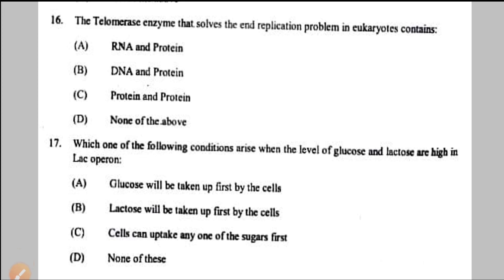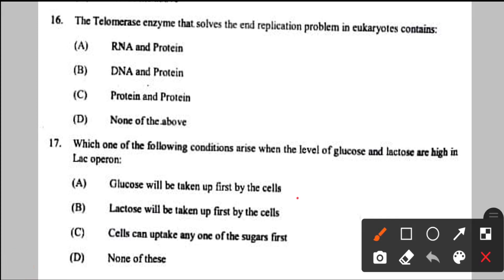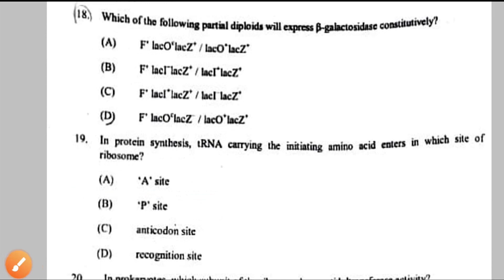Question number 17: condition when levels of both glucose and lactose are high in lac operon. When glucose level is low, lactose metabolism works and lactose gets converted to glucose and galactose. But when glucose is already present, there is no significance for lactose metabolism and the lac operon is inactivated. So glucose will be taken up first by the cells — option A.